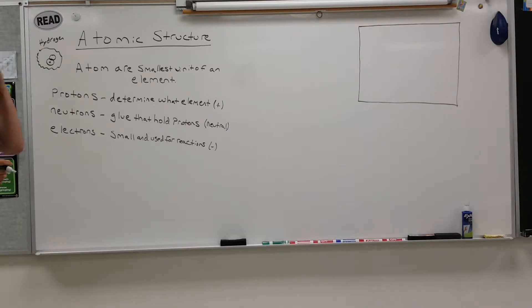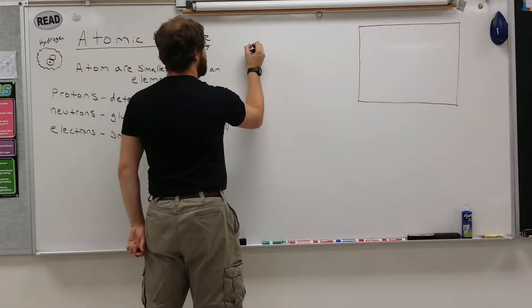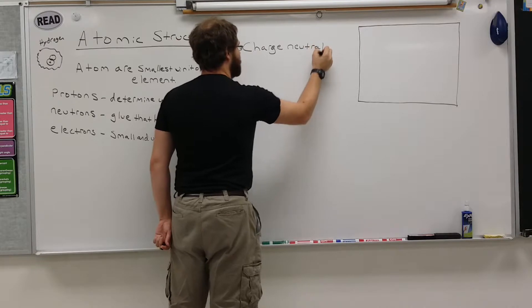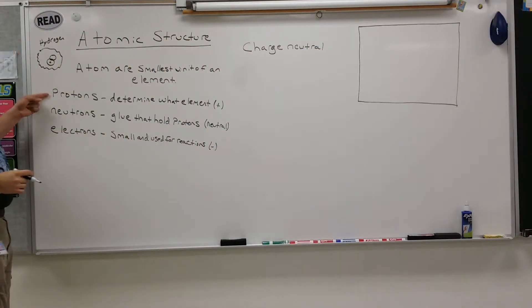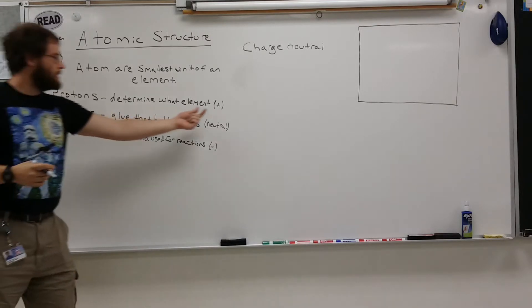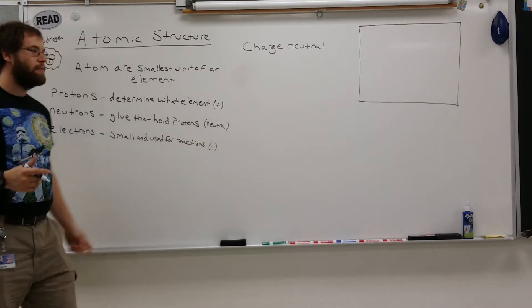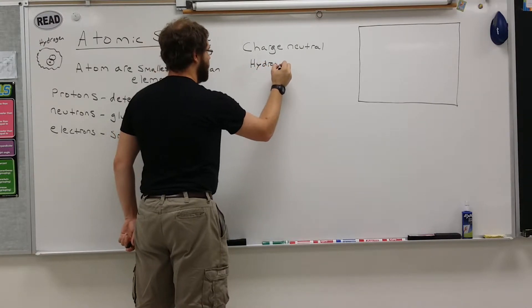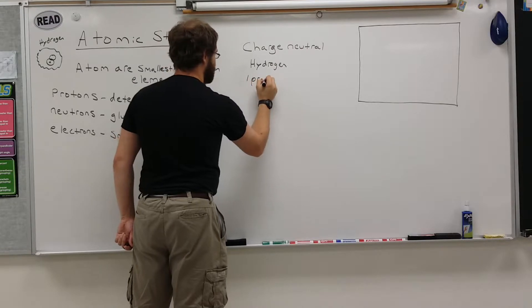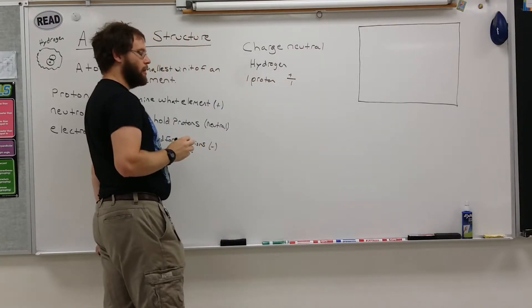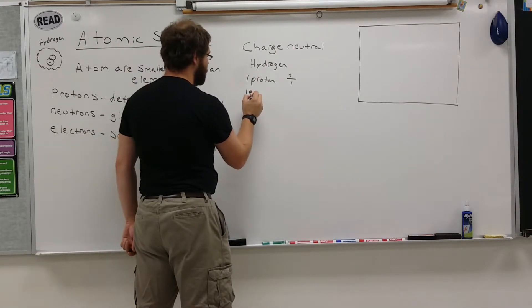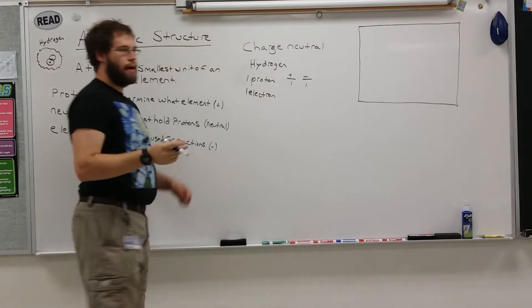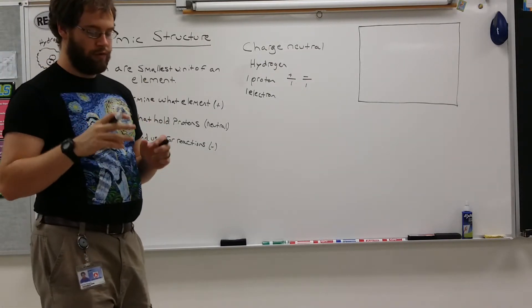And so they are made up of these three particles, and atoms are always charge neutral. So what does that mean? Charge neutral means that their amount of protons and their amount of electrons equal each other. The amount of positive charges and the amount of negative charges have to be the same. So for instance, we'll go back to our hydrogen here. We know hydrogen has one proton, which means it has one positive charge. And that means for it to be an atom of hydrogen, it must have one electron so that it has an equal amount of positive and negative charges. That makes it charge neutral.